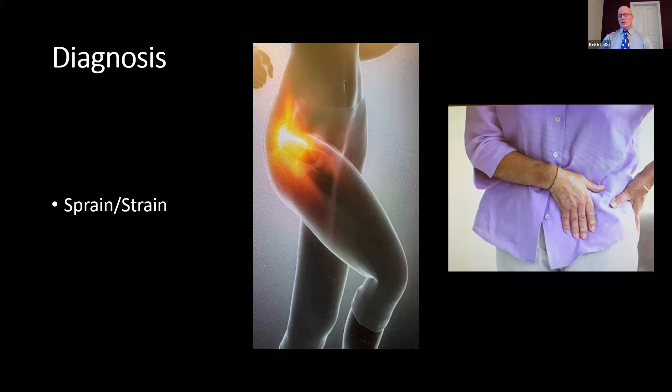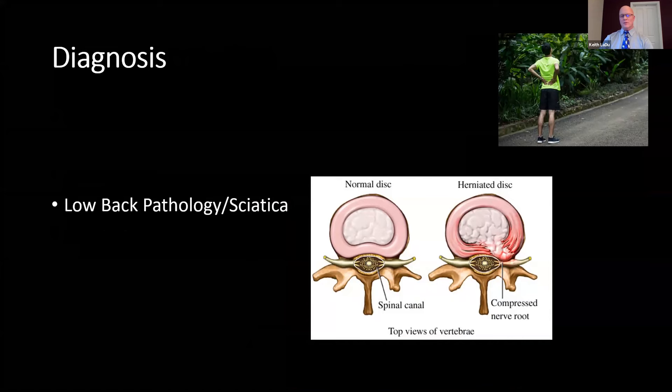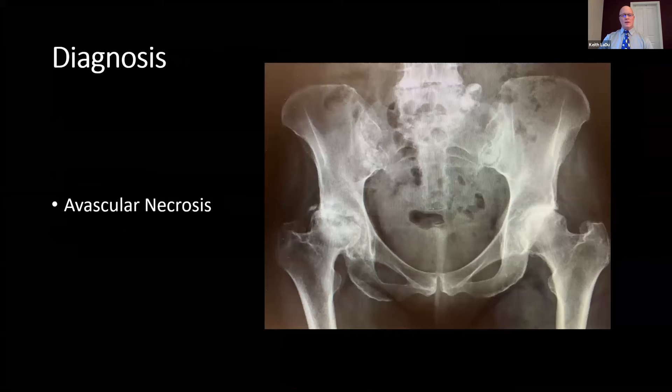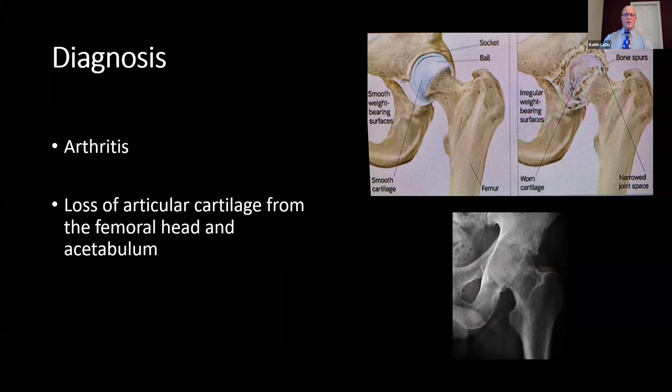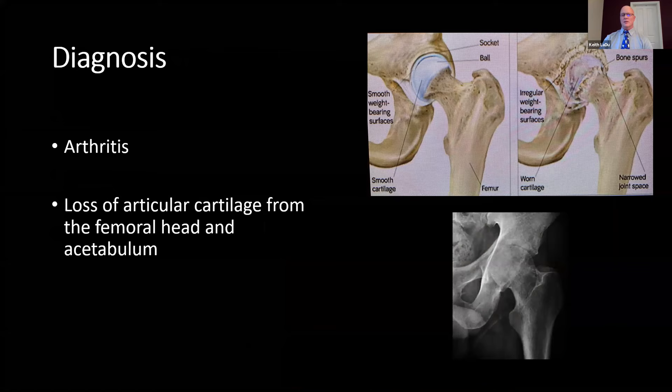As far as diagnoses, these include sprains and strains, bursitis and IT band syndrome, low back pathology such as herniated disc or sciatica, acetabular labral tears, and avascular necrosis. With arthritis, you get loss of the articular cartilage from the femoral head and acetabulum, which leads to joint space loss and osteophyte formation.